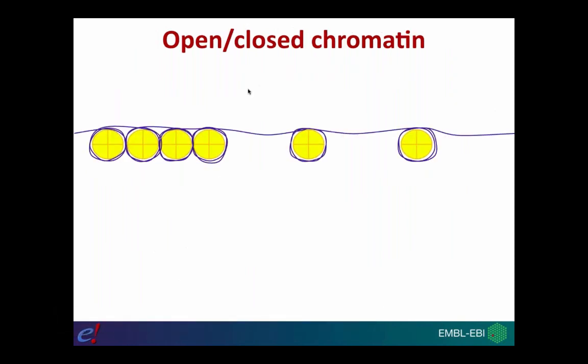The final concept to cover before looking at Ensembl data is the pattern of open and closed chromatin. The DNA is wound around histones, and the histones are packed to form chromatin, condensing the DNA and allowing it to be packaged inside the nucleus.